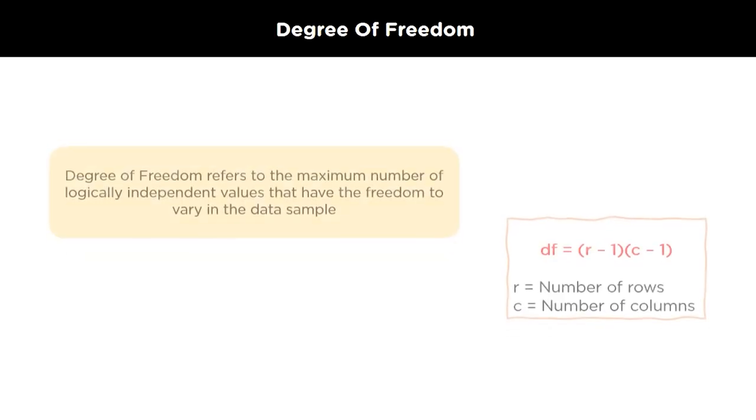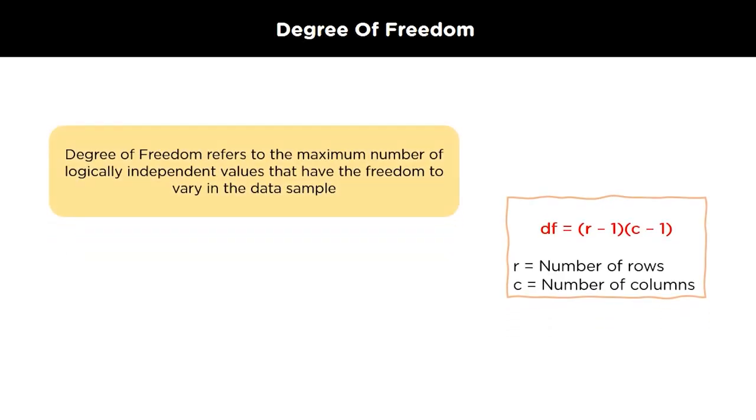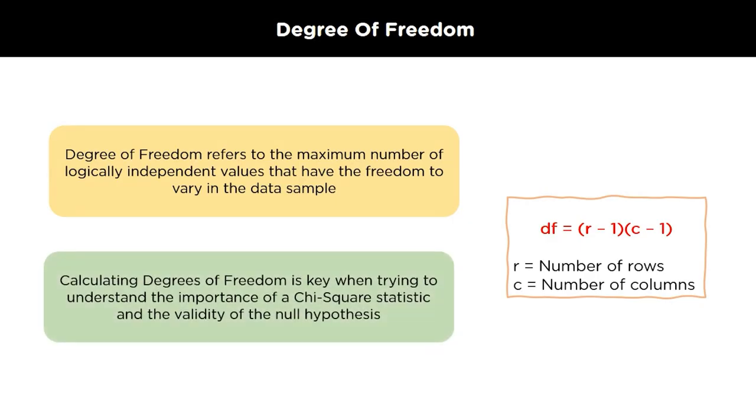Degree of Freedom. The degree of freedom is a statistical calculation which represents the number of variables that can vary in a calculation. The degree of freedom can be calculated to ensure that the chi-square test is statistically valid. These tests are frequently used to compare observed data with the data that would be expected to be obtained if a particular hypothesis were true. The formula to calculate degree of freedom is number of rows minus 1 multiplied by number of columns minus 1.